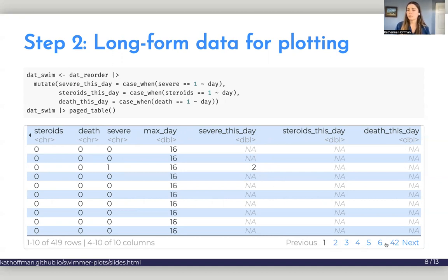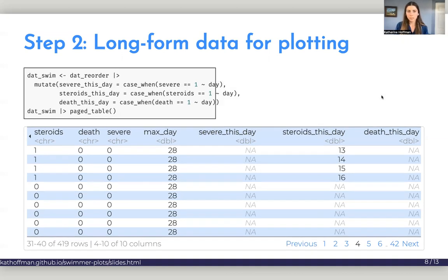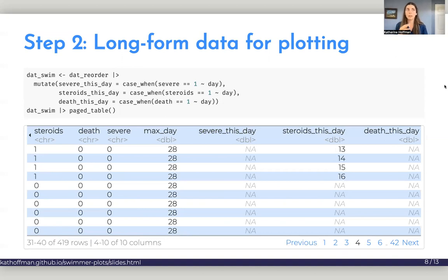They never received steroids, but they did die on day 16. And so instead of being an indicator variable, it's now 16. You can look and see that a different patient received steroids, for example, on days 13, 14, 15, and 16. So this is what we're going to save and start to plot in our ggplot.